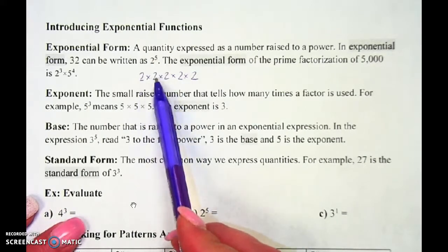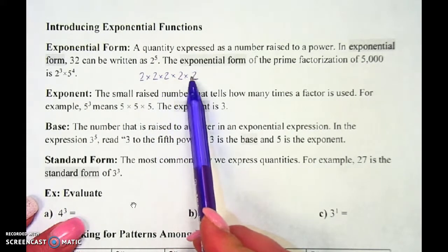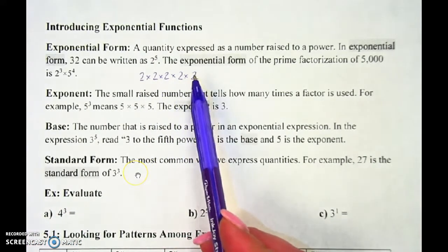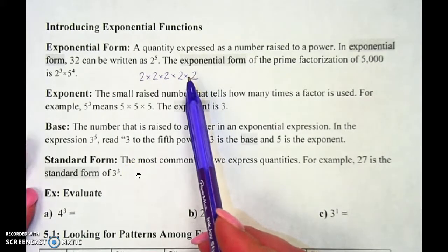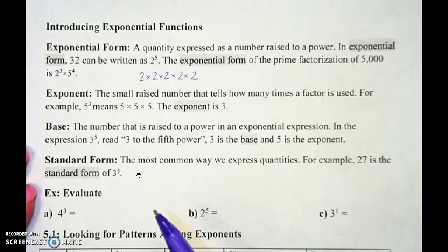So what that means is 2 times 2 times 2 times 2 times 2 — 2 times itself 5 times. That's what makes 32.